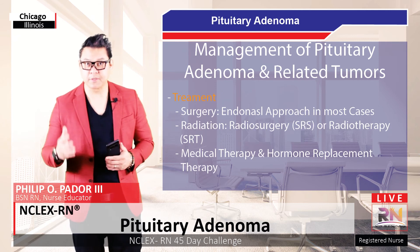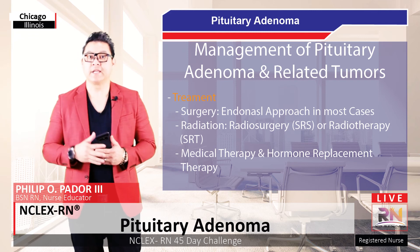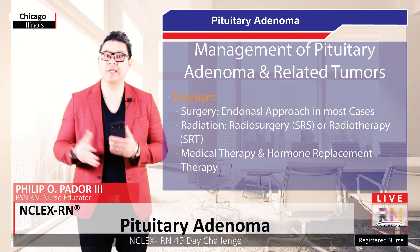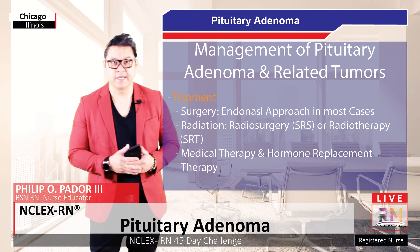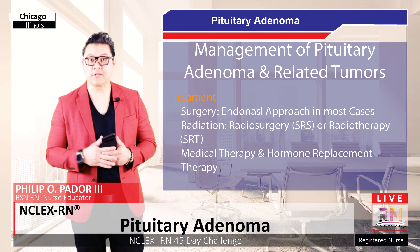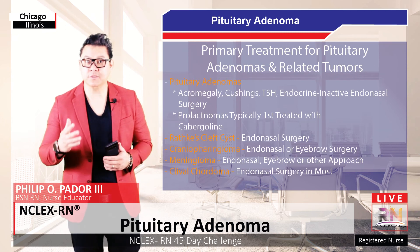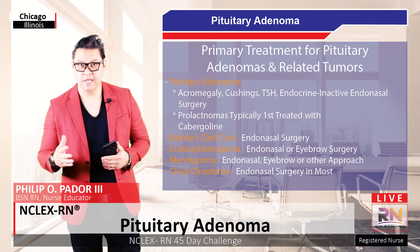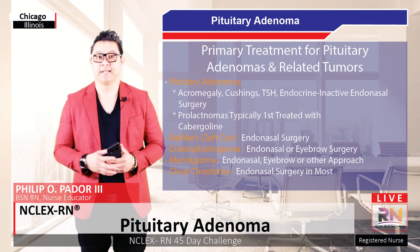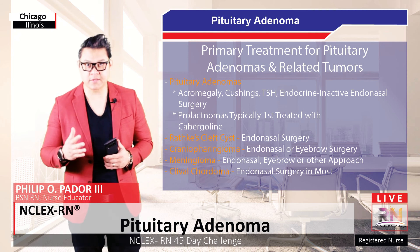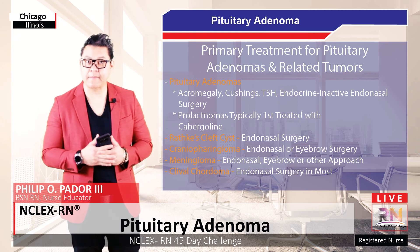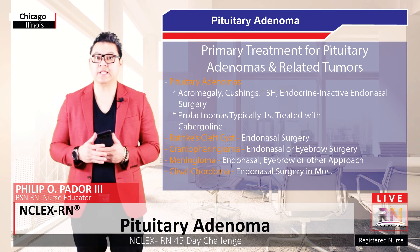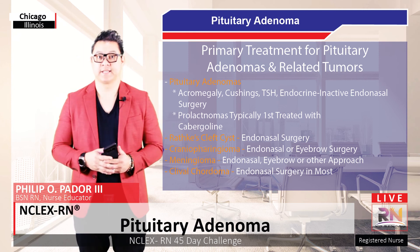Primary treatment for most symptomatic pituitary adenomas and related tumors involves endonasal endoscopic surgery, and in some cases radiosurgery or radiotherapy, as well as medical therapies and hormonal replacement. Primary treatment for most pituitary adenomas is endonasal endoscopic surgery, with the exception of prolactinomas, which are typically first treated with cabergoline.